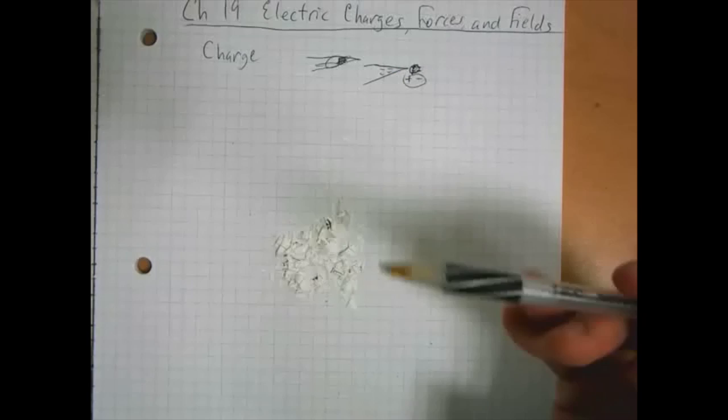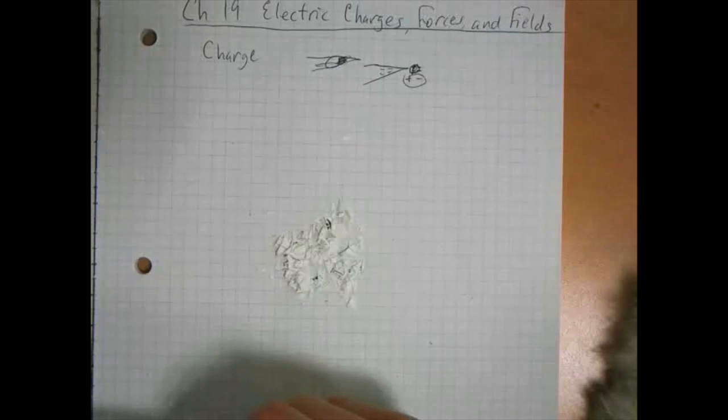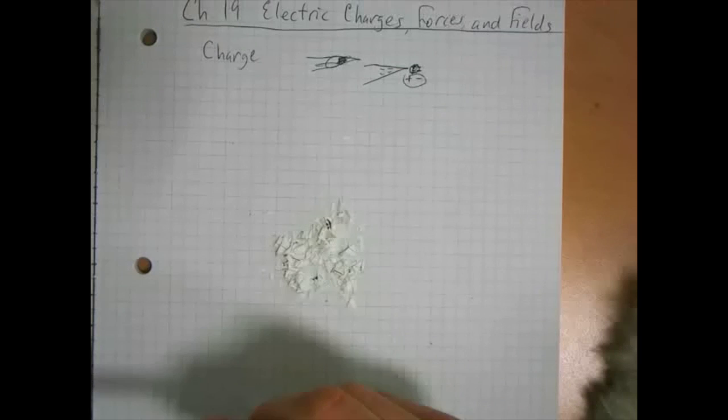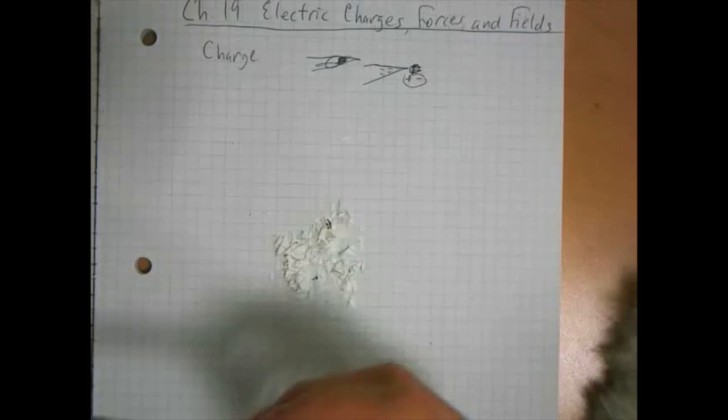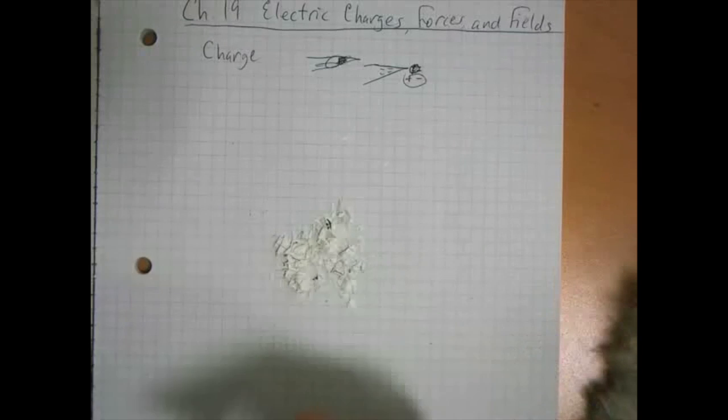That's also what happens if you rub a balloon on your head, your hair will stand up. When you pull the balloon away, it's because charge is being transferred, and then your hair, different strands of hair have the same charge and so they repel each other. That's what causes your hair to stand up.